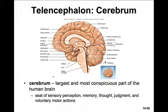The cerebrum is derived from the embryonic telencephalon. It's the largest and most conspicuous part of the human brain. It's the cerebrum that allows us to view lectures, read and comprehend words, and remember ideas in order to take an exam. It's the seat of our sensory perception, memory, thought, judgment, and our voluntary motor actions.